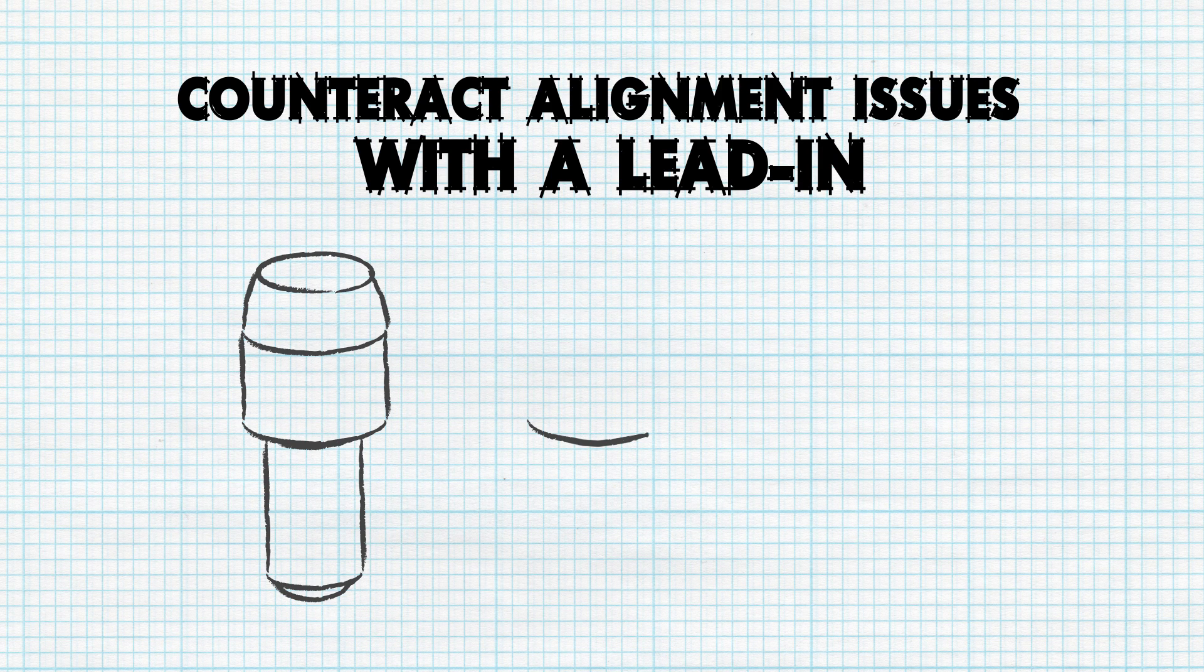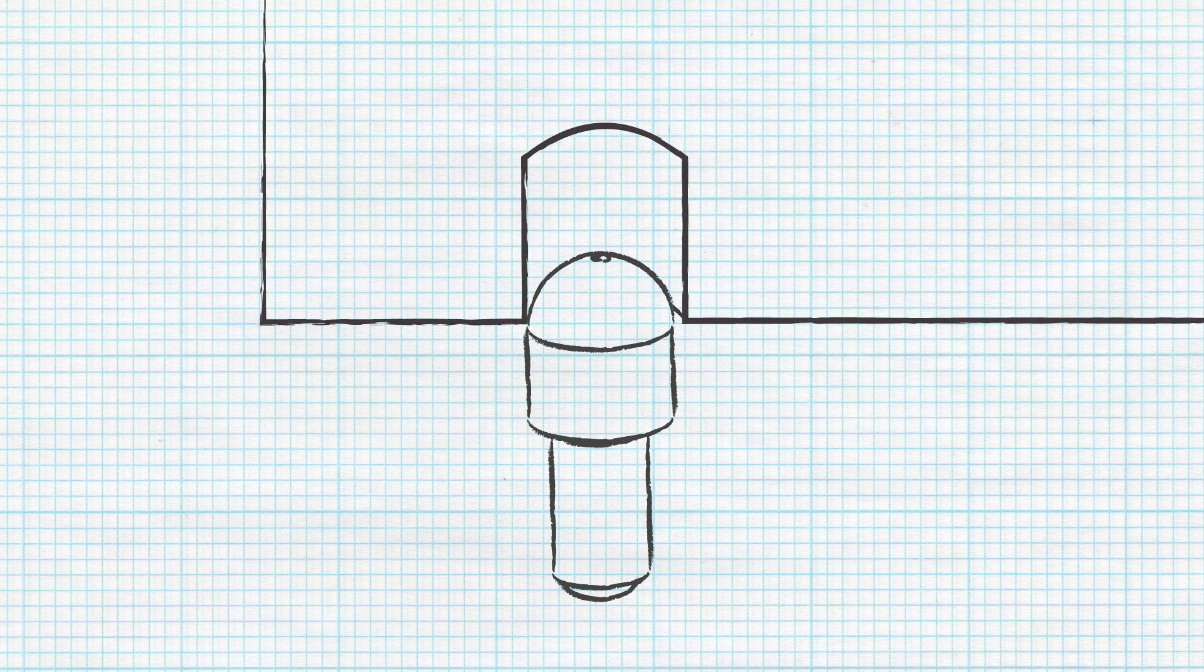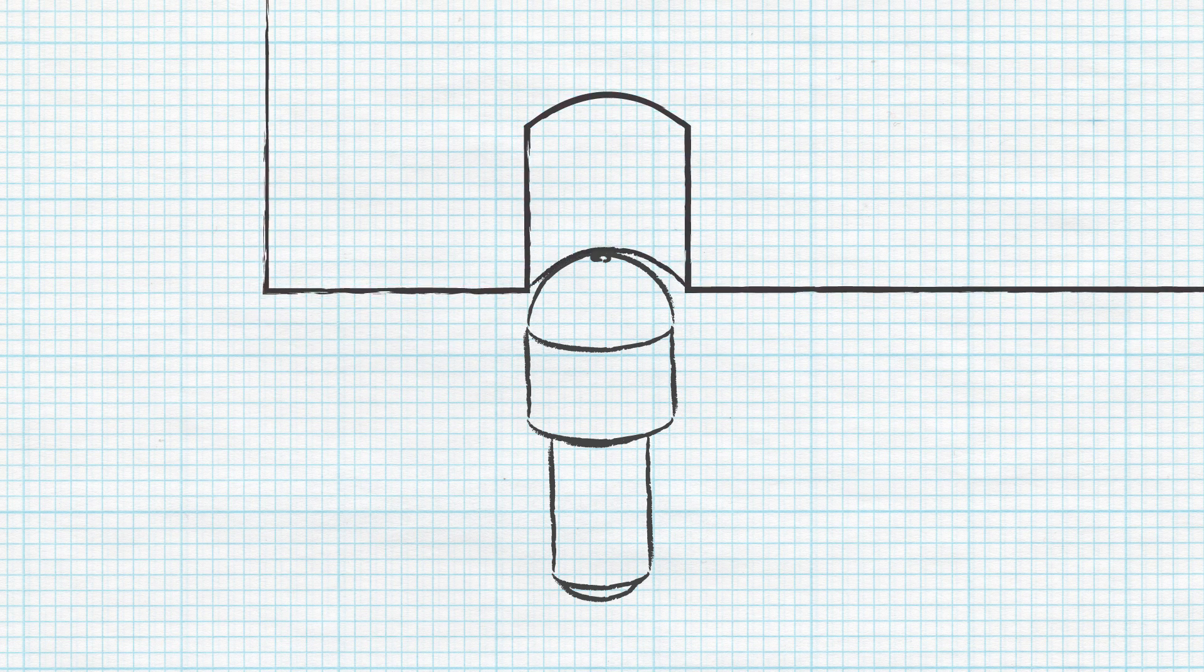One method to counteract this issue is designing the jig using locating pins with a lead-in on the head. This can be in the form of an angled or tapered head, sphere, or bullet nose, and helps to center and ease the part onto the pin.